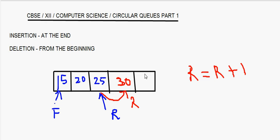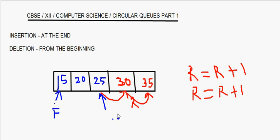Again one more space is there. Now I want to insert one more element, say 35. Then again the same thing happens — rear is equal to rear plus 1 and it moves to this position. So now I have the front here and the rear at this place. Now the queue is full, so at this point I can't put any more elements into the queue.